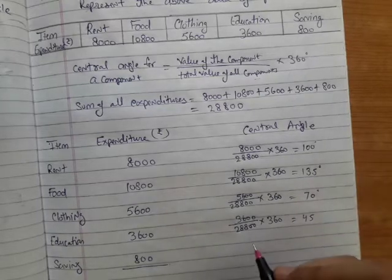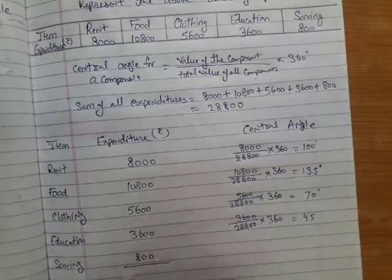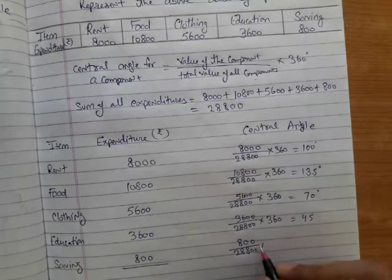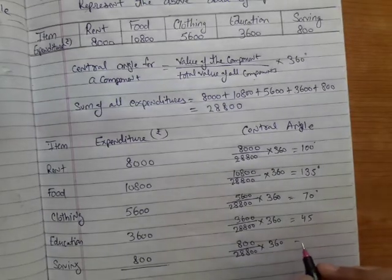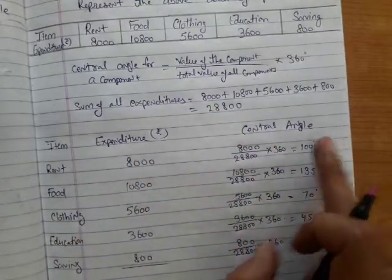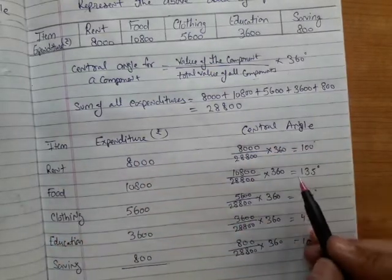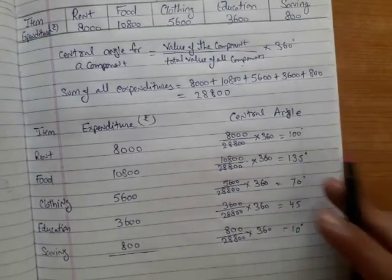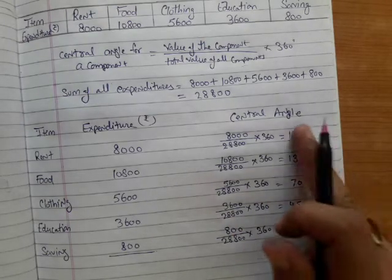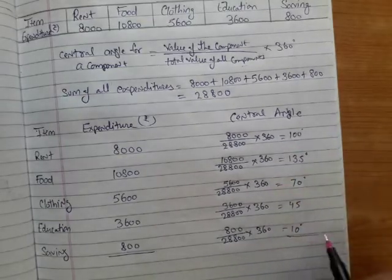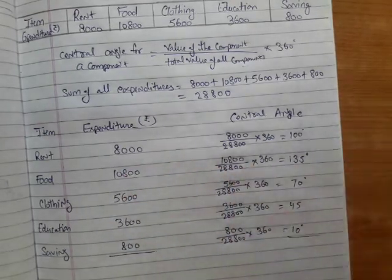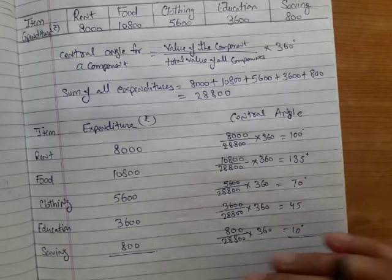From this formula we can find the central angle for each component. Central angle for rent is 100 degrees, food is 135 degrees, clothing is 70 degrees, education is 45 degrees, and saving is 10 degrees. To verify, add all angles — if their sum equals 360 degrees, the calculations are correct.